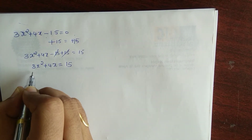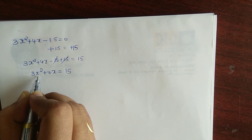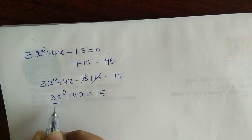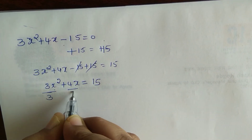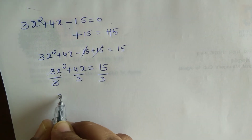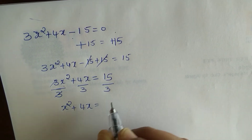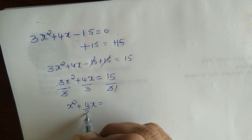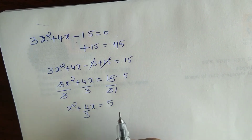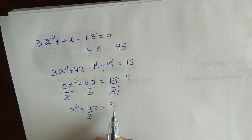The leading coefficient must be 1, so we must divide by 3 across the whole equation. The 3 cancels, and the equation becomes x squared plus 4 by 3 times x is equal to 5.